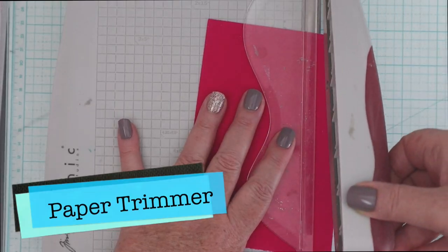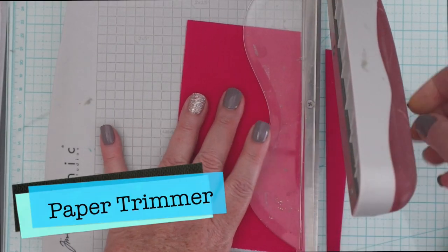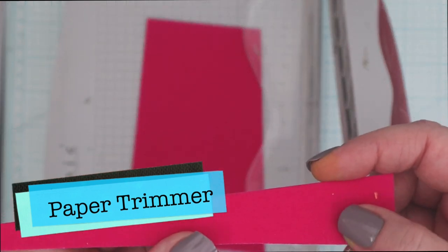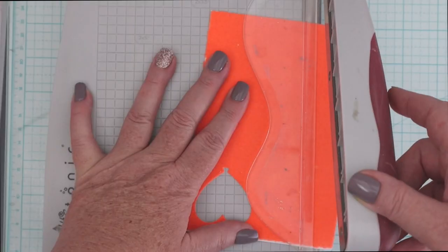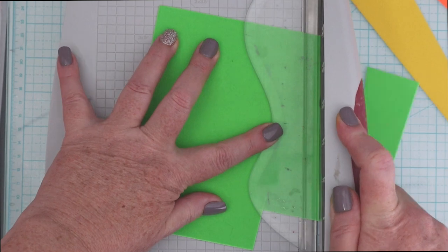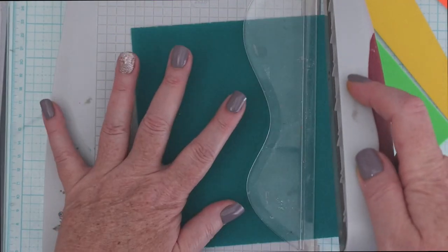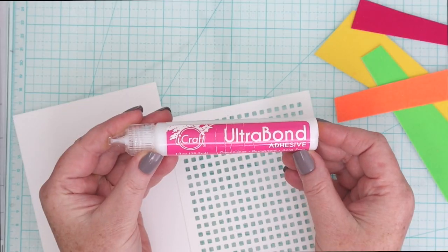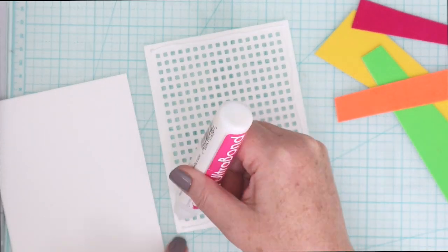One of the simplest way that you can use these Flock Transfer Sheets is simply to cut them with a paper trimmer. You can absolutely use a trimmer, any trimmer that you have, to cut the Flock. I love doing this because the Flock is on a paper background, so it makes it really easy to cut with scissors or trimmers or even dies, which we'll cover later in the video.